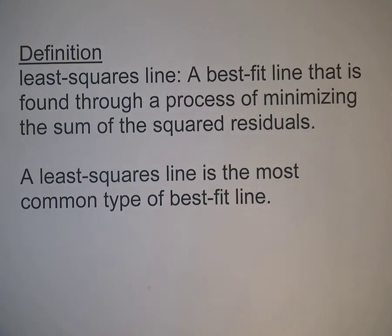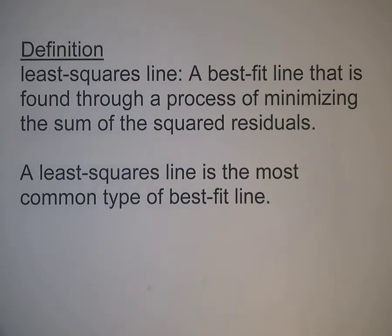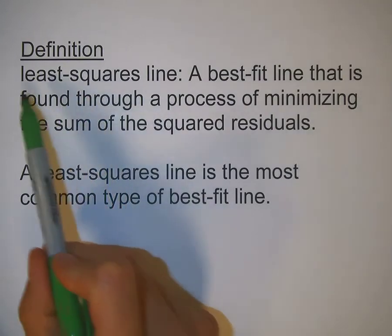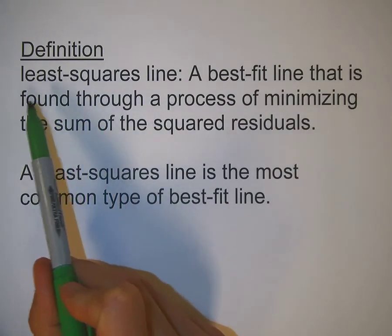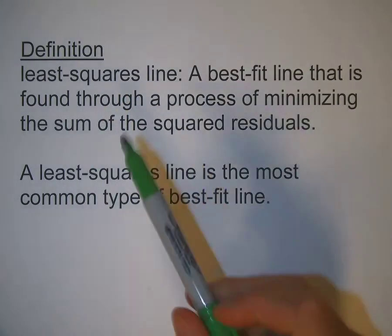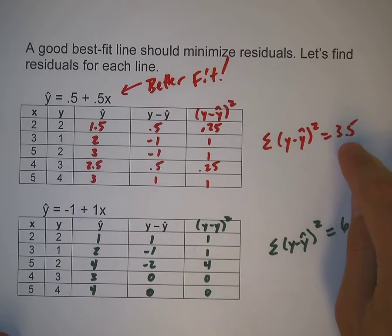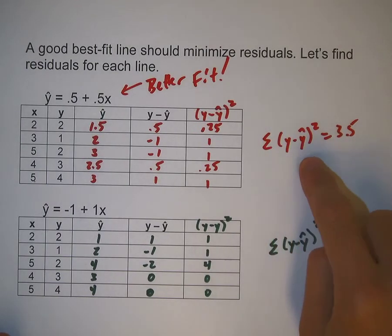The least squares line is a best fit line found through minimizing the sum of squared residuals. In the last examples, we found which line has the smaller sum of squared residuals. When calculating a least squares line, there's a process to find the line with the least squares. We're not going through that process, but understand that finding a least squares line means finding the minimum value of the sum of squared residuals.